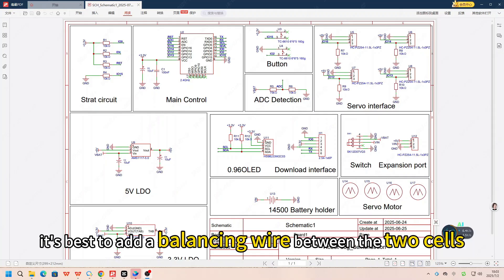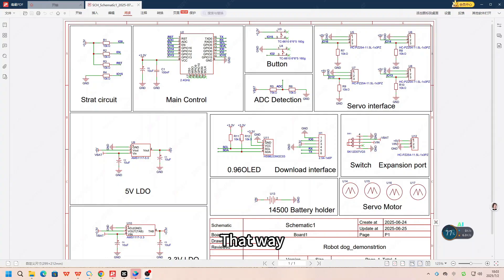It's best to add a balancing wire between the two cells. That way, your charger can balance them properly and extend battery life.